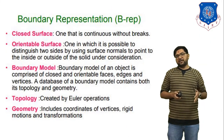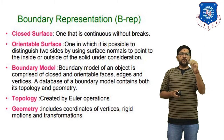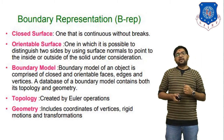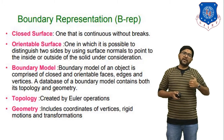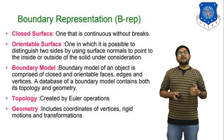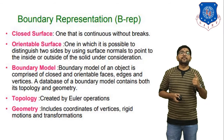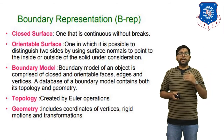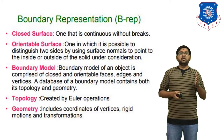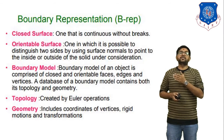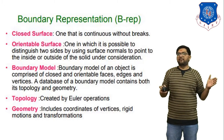Using boundary representation, we look at how to convert any model from 2D to 3D and how to generate a 3D object. In boundary representation, first we have to understand closed surfaces. A closed surface is continuous without gaps. Second is an orientable surface, one in which it is possible to distinguish two sides by using the surface normal pointing to the inside or outside of the solid under consideration. Next, we combine two surfaces to make one solid model.